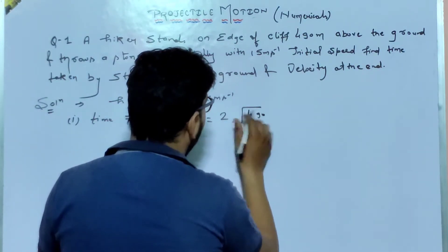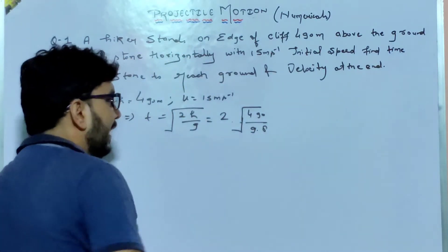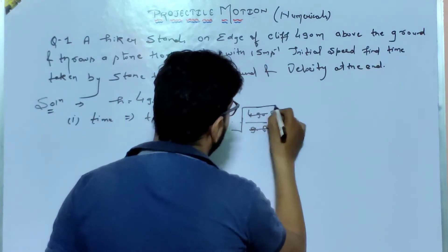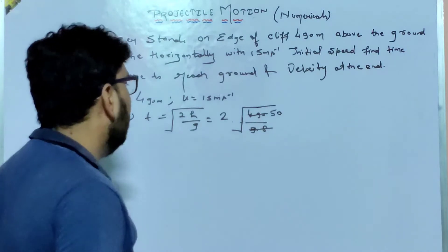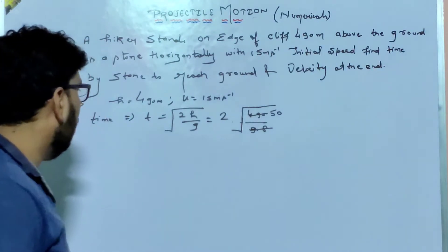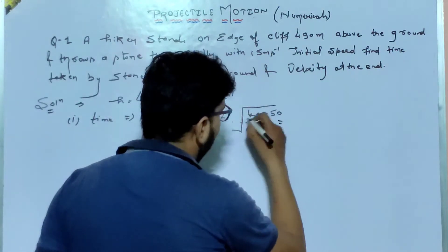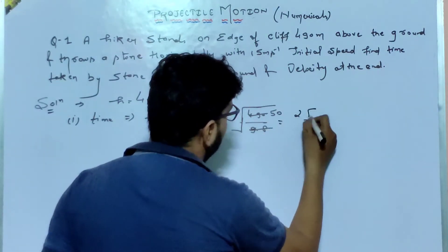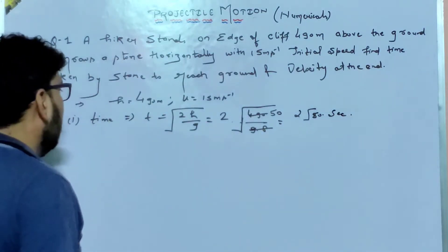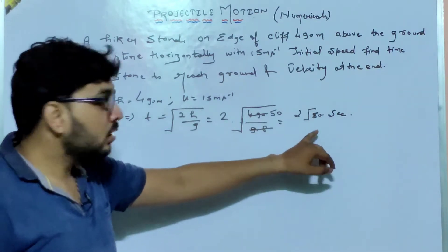So t = √(2 × 490 / 9.8). If I divide, 490 divided by 9.8 cancels 50 times, so it will be 2√50. That is the time period — 2√50 seconds. Taking the root of 50 will give the complete answer.